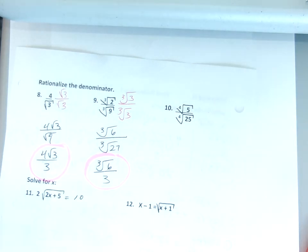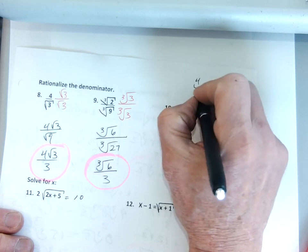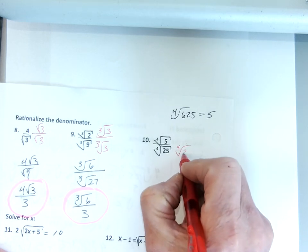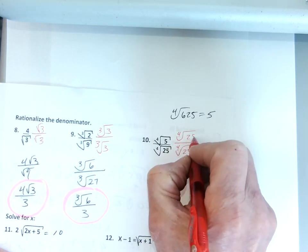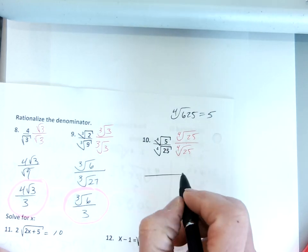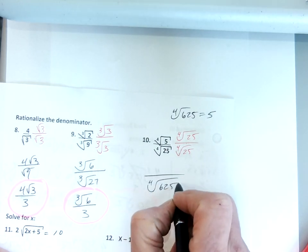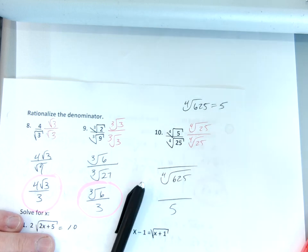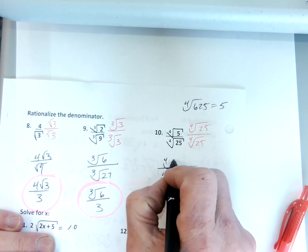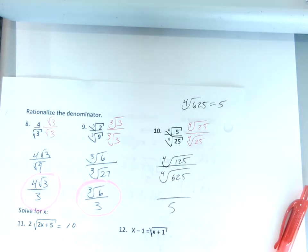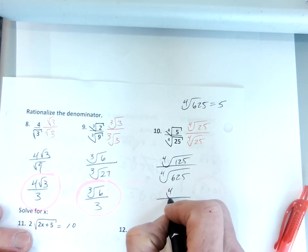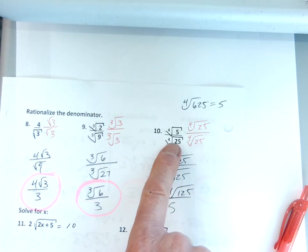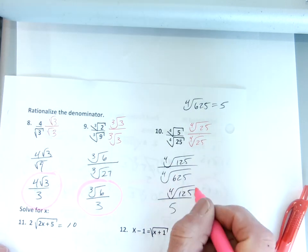Number ten is a fourth root. Well, 625 — the fourth root of 625 is 5. So I multiply by the fourth root of 25 over the fourth root of 25. When I do that, on the denominator I will get the fourth root of 625, but the fourth root of 625 is 5. In the numerator I will get the fourth root of 125, and there is no fourth root of 125 I can simplify. I can't do anything with it, so I'm going to leave it as the fourth root of 125 over 5. I've rationalized the denominator — there's no longer a root in the denominator.